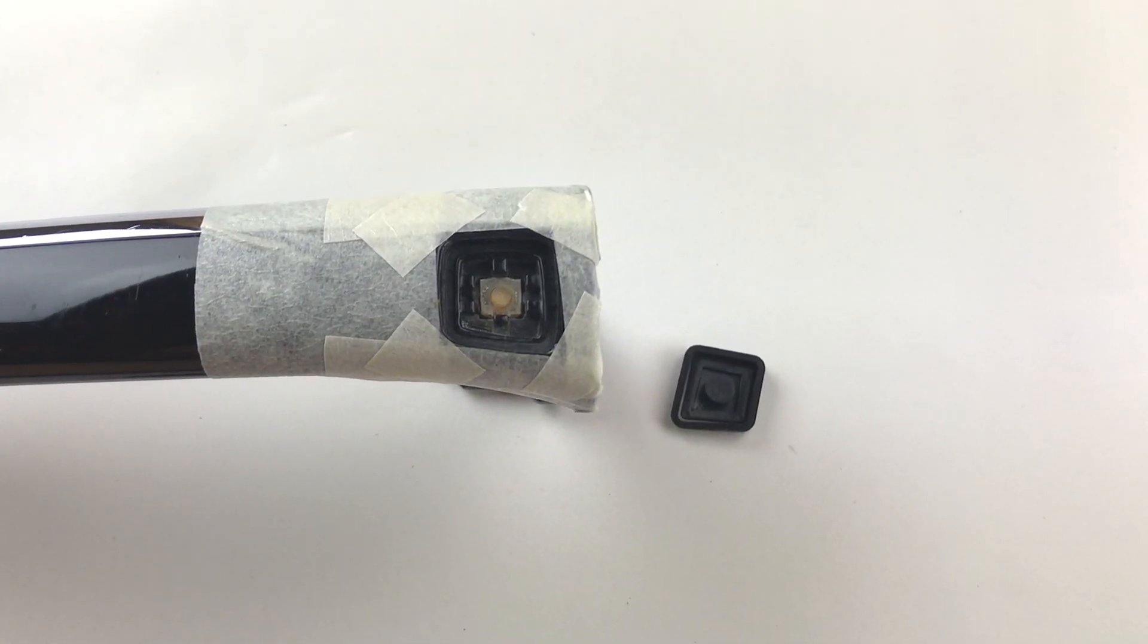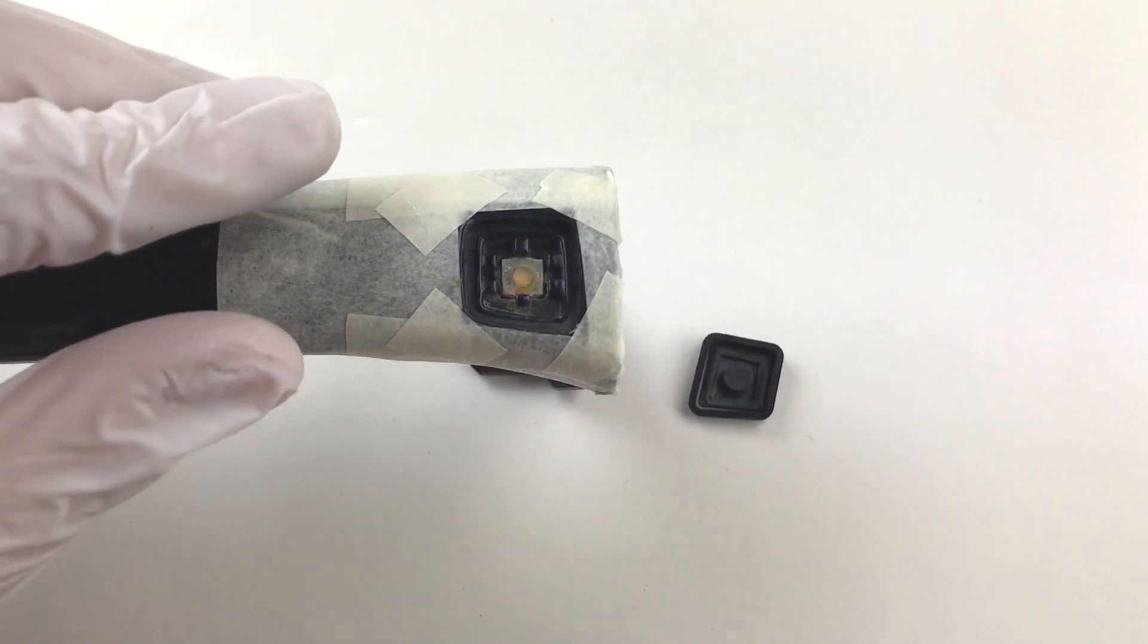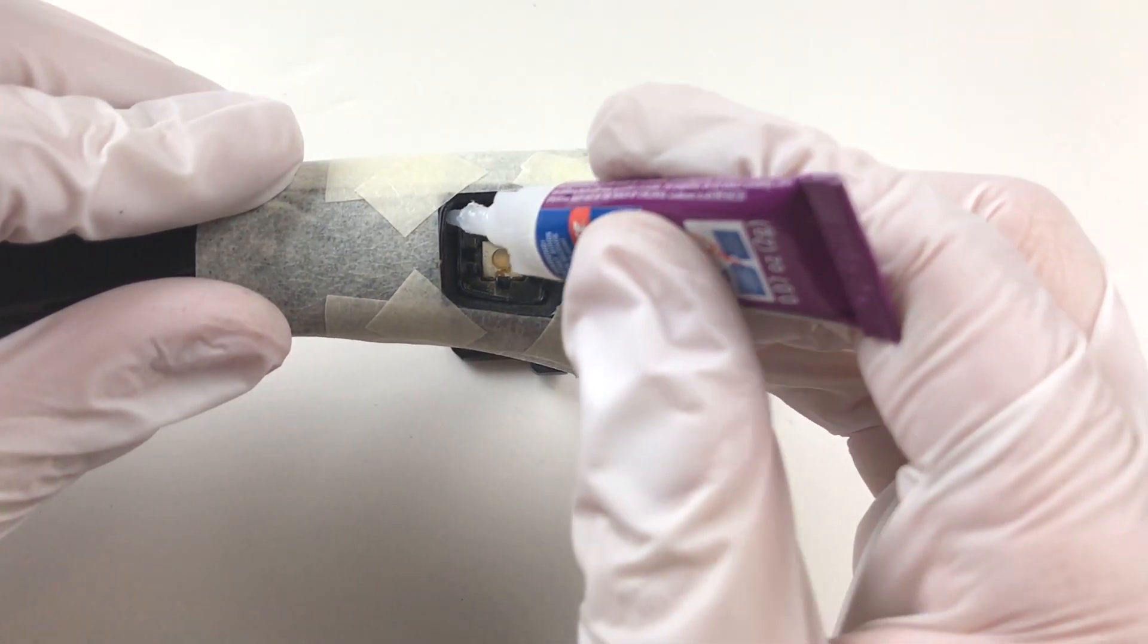Allow 45 seconds for the activator to dry. Then apply a small quantity of the glue inside the groove of the handle.